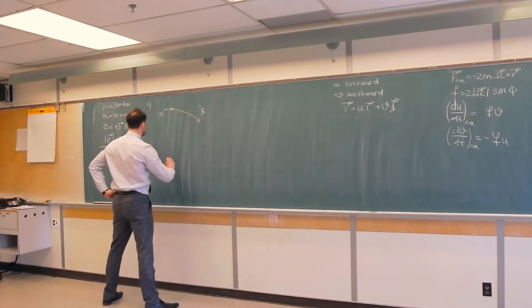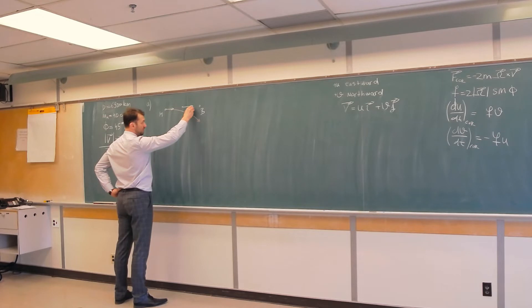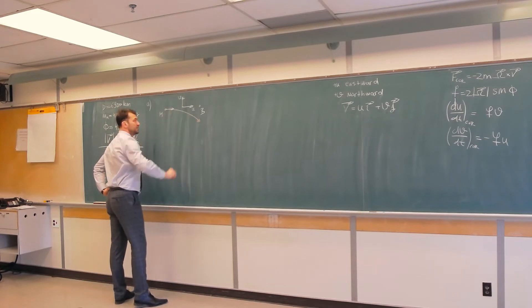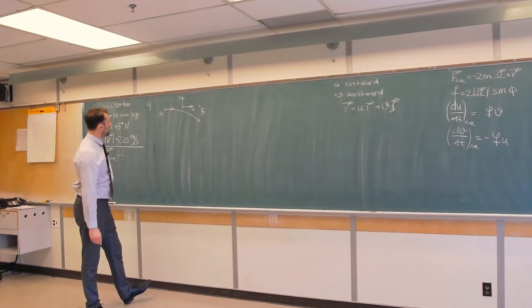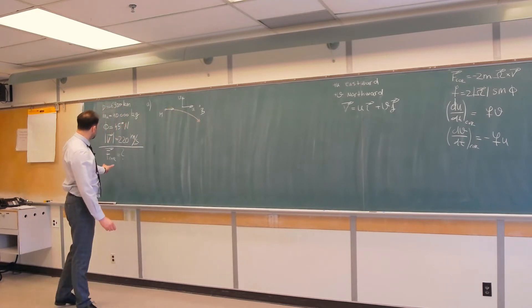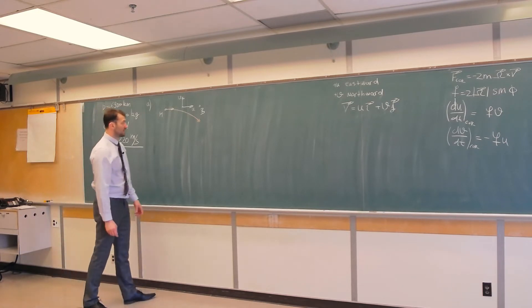So again, it is useful to define a coordinate system over here. Positive x direction, or positive u, is towards the east. Positive v is towards the north. The aircraft would be deflected like so, so deflection would be negative. So we better get Coriolis force that has negative component as our result.